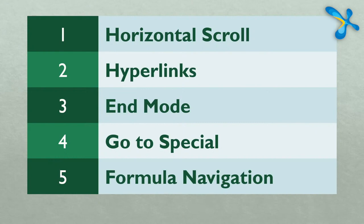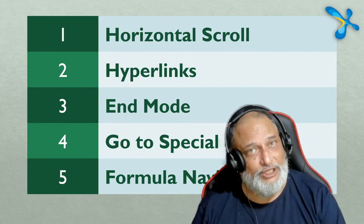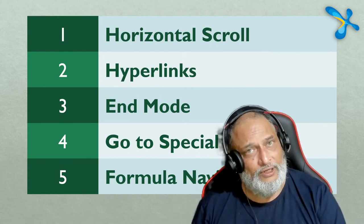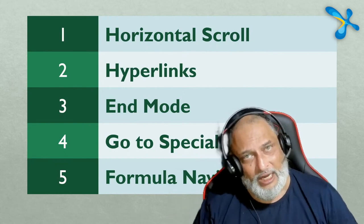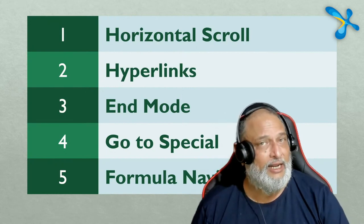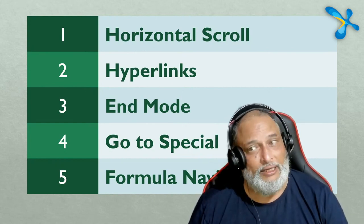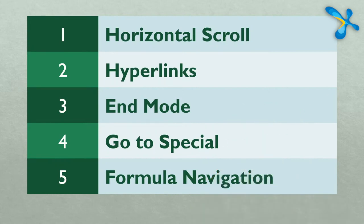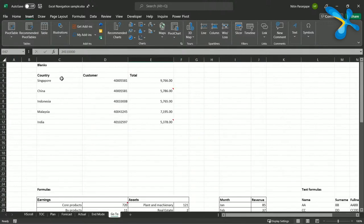Now the fourth topic is Go To Special. Excel has a large amount of space — 1 million rows and 16,000 columns, that's just one sheet. Technically you can have 256 sheets, so there's lots of space to navigate. It's different than PowerPoint or Word — in Word it's a linear document, page by page. In Excel it can become very daunting. There is a special way to quickly go from one place to another: Go To Special. The shortcut is Ctrl+G or F5.